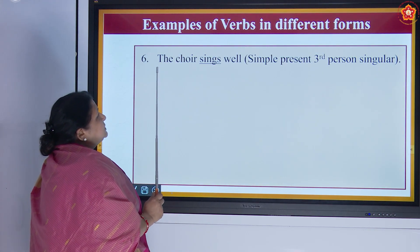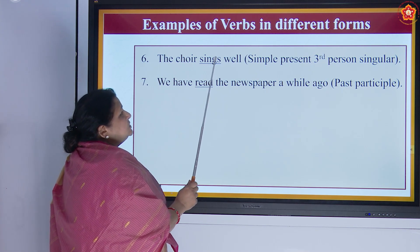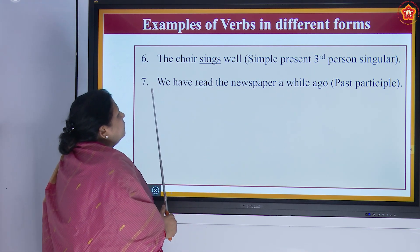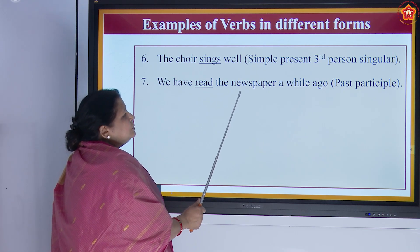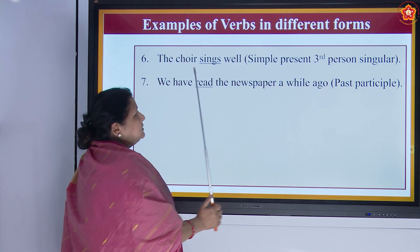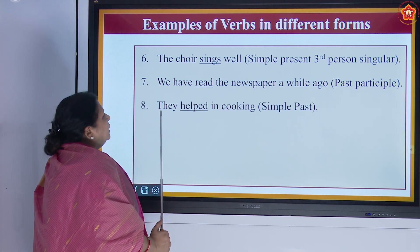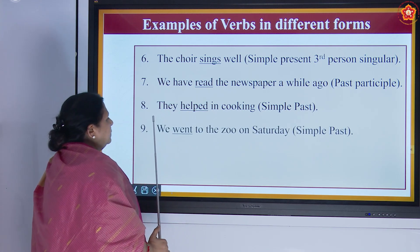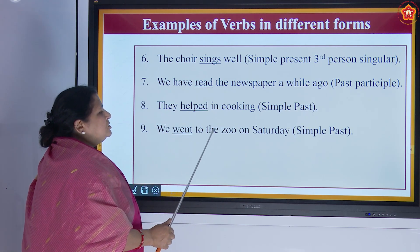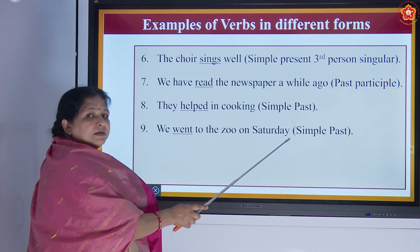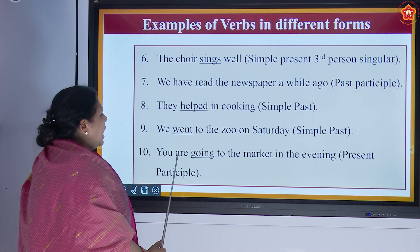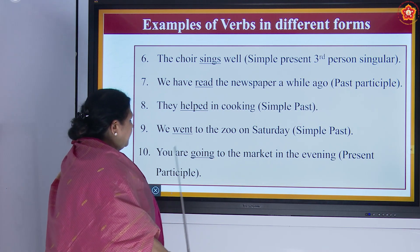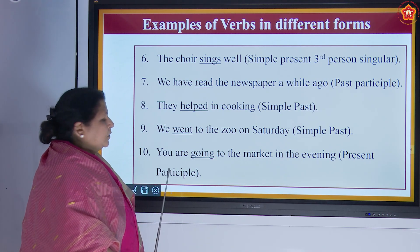Some more examples: 'The choir sings well' — simple present third person singular. 'We have read the newspaper a while ago' — past participle. 'They helped in cooking' — simple past. 'We went to the zoo on Saturday' — simple past. 'You are going to the mall in the evening' — present participle.